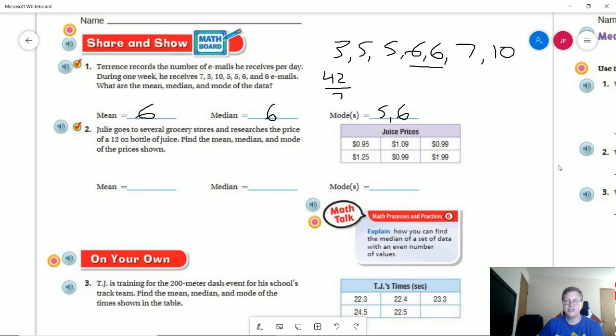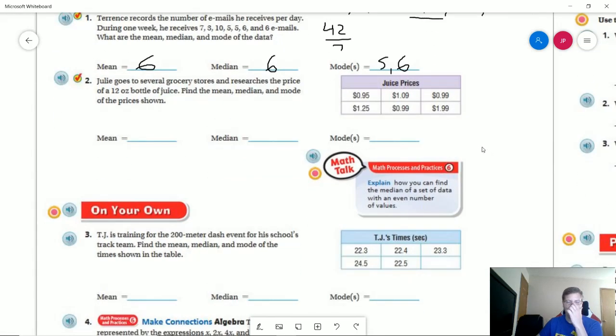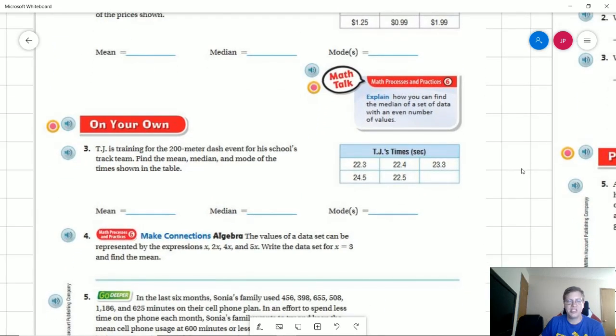Number 2 we could do, but there's not, I mean, other than working with decimals, we're not going to get a whole lot of benefit from that. We are going to be working with decimals anyway on number 3.